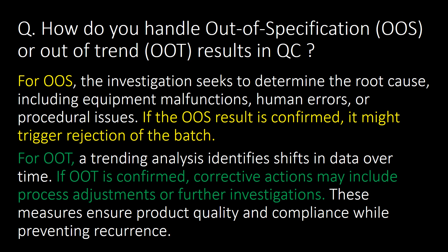How do you handle out-of-specification (OOS) or out-of-trend (OOT) results in QC? For OOS, the investigation seeks to determine the root cause, including equipment malfunctions, human errors, or procedural issues. If the OOS result is confirmed, it might trigger rejection of the batch. For OOT, a trending analysis identifies shifts in data over time. If OOT is confirmed, corrective actions may include process adjustments or further investigations to ensure product quality, compliance, and prevention of recurrence.